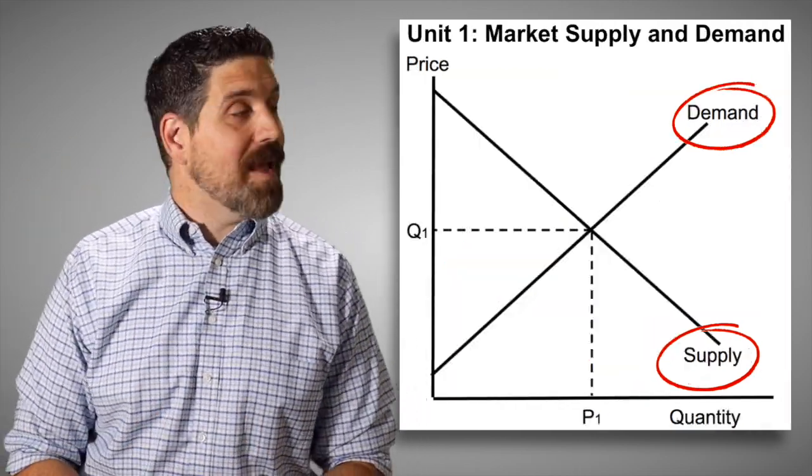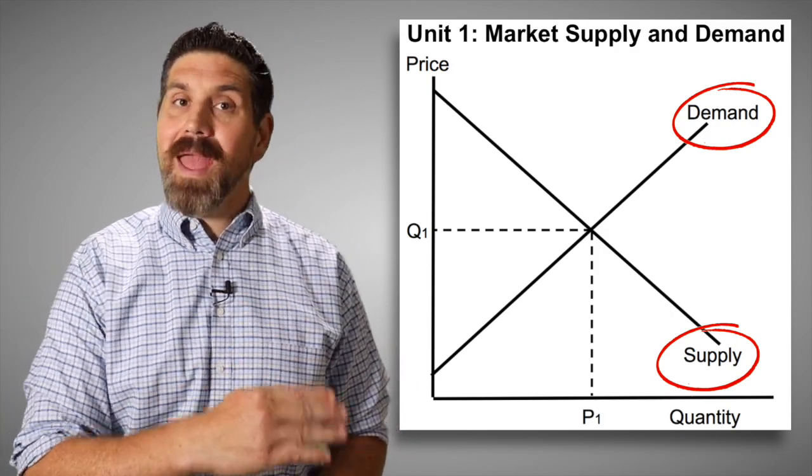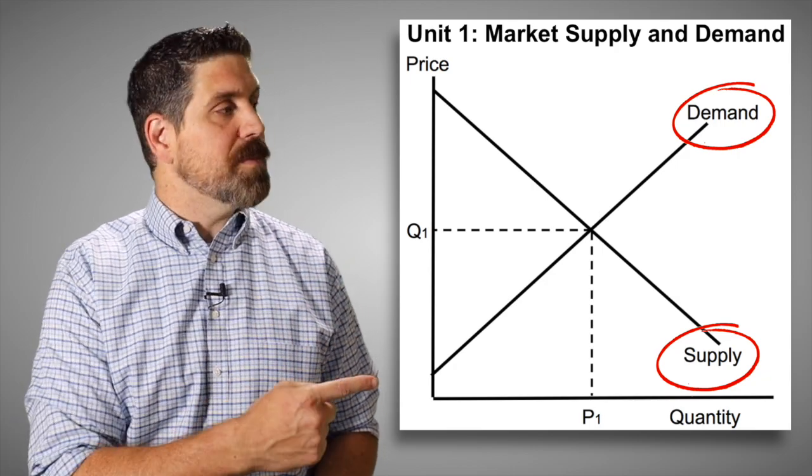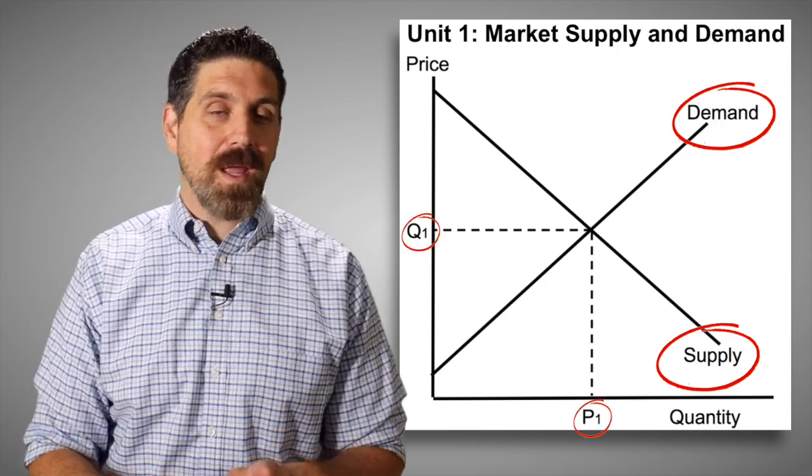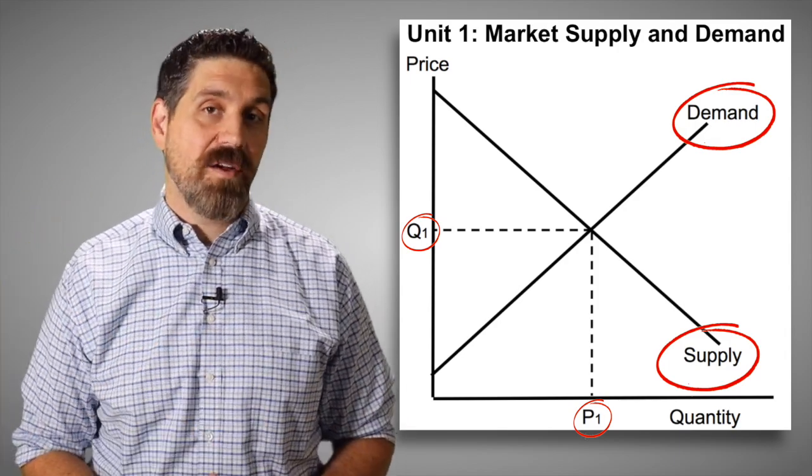Now in unit two for supply and demand, this graph has four mistakes. First, I flip supply and demand. Demand goes to the dirt, it's downward sloping. Supply goes to the sky, upward sloping. So those are mislabeled. Also look at the equilibrium, quantity, price. Don't label it like that. It's price and quantity. Four mistakes on that graph.